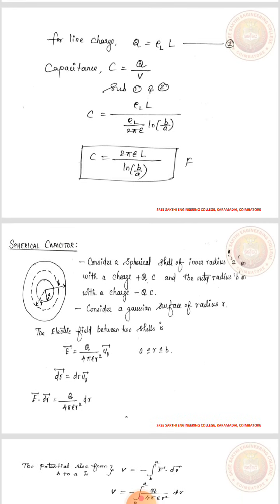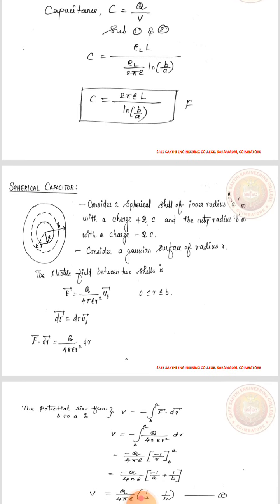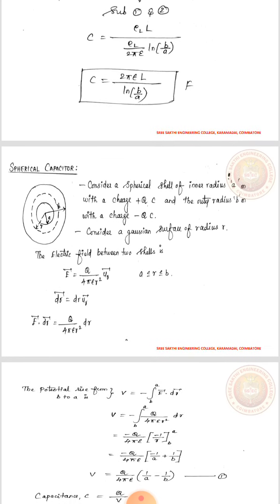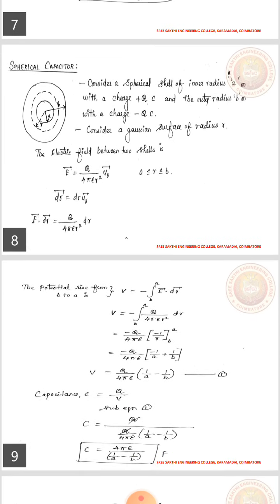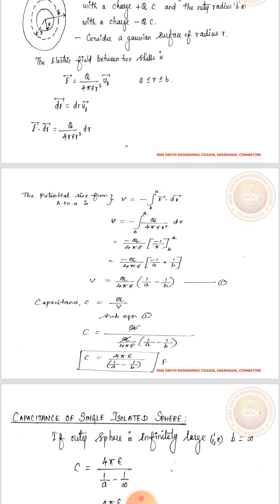Next, spherical capacitor: Consider a spherical shell of inner radius a with a charge of plus Q and outer radius b with a charge of minus Q. The surface is a Gaussian surface of radius r. The electric field between the two shells is given by E vector equals Q by 4 pi epsilon r squared into u_r vector. The dR vector equals dr into u_r vector. The potential difference from b to a is given as V equals minus integral from b to a of E_r vector dot dR vector. Applying the values and limits, we get V equals Q by 4 pi epsilon times the quantity 1 by a minus 1 by b.